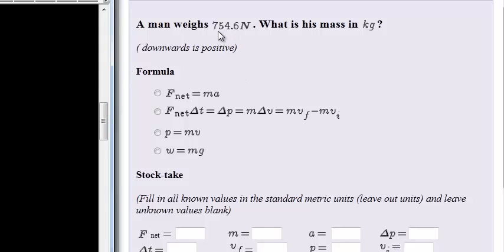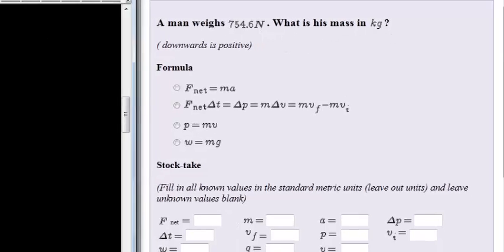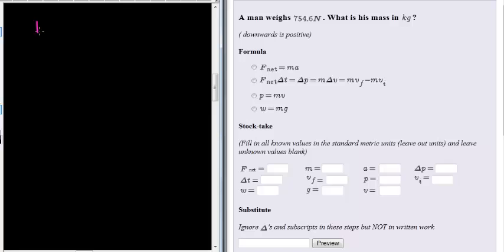A man weighs 754.6 Newtons. What is his mass in kilograms? So we know our formula that we use to work out mass and weight is weight is equal to mass times gravitational acceleration.